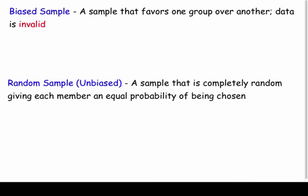If it favors one group over another, it's invalid and biased. The opposite would be an unbiased sample, which we call a random sample. When it's unbiased, that's good — each member has an equal probability of being chosen. That's what we want to shoot for: unbiased samples with good data to make predictions.